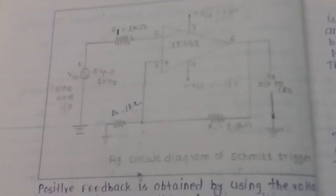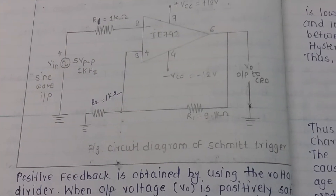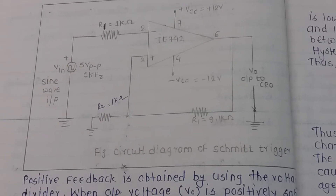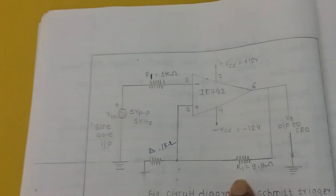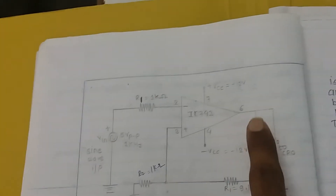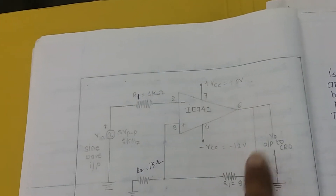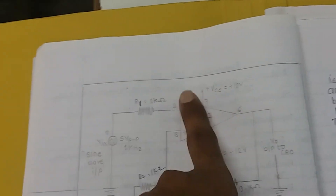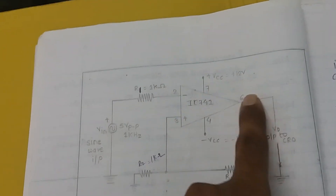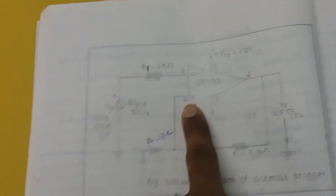Today class, you are going to learn about zero crossing detectors. Before we go there, we are going to recap about Schmitt trigger circuits. It is one of the closed loop configurations of the operational amplifier. Compared to a normal closed loop where the output is connected to the minus terminal, in a Schmitt trigger the output is connected to the plus terminal.